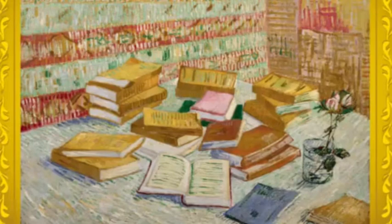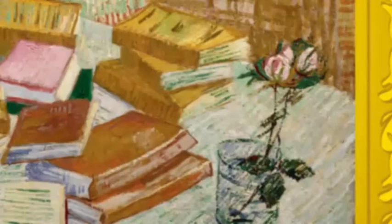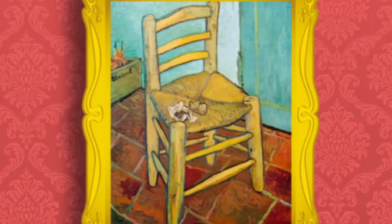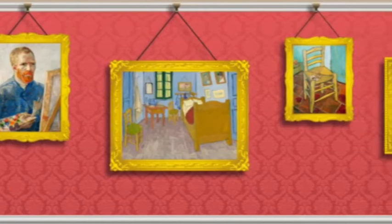Here's another picture by van Gogh. There are lots of books. There's a flower too. And here's another picture — it's a chair. It's old. Van Gogh painted pictures of lots of things.